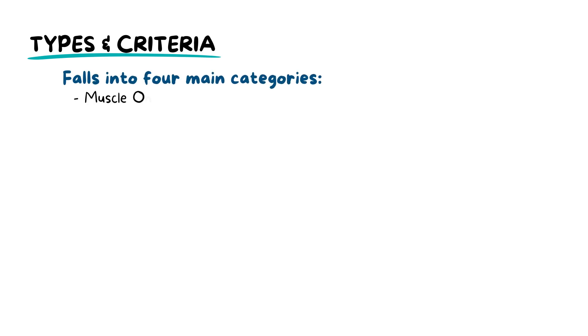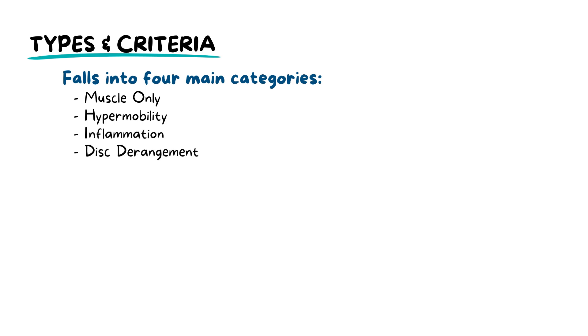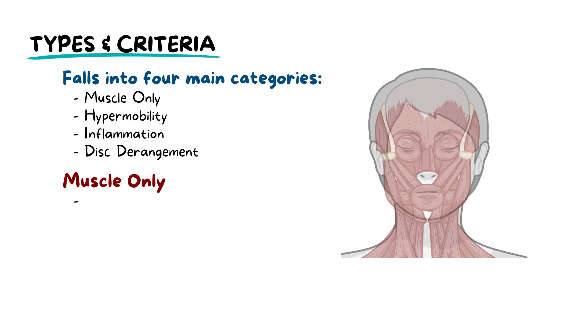TMD falls into four major categories: muscle only, hypermobility, inflammation, and disc derangement. Muscle-only problems result from muscle overuse or damage, causing local myalgia. There is also centrally mediated myalgia, which is caused by damage to motor neurons.